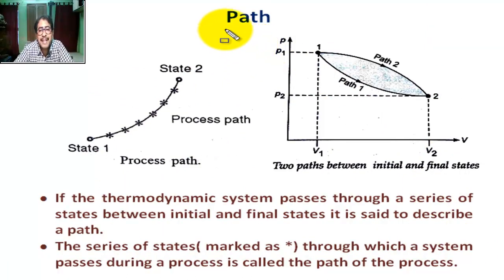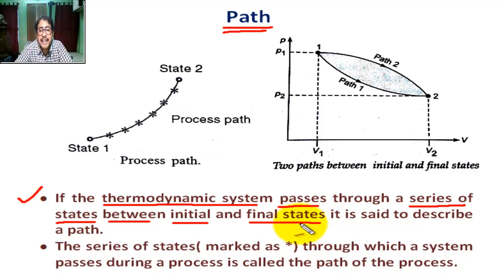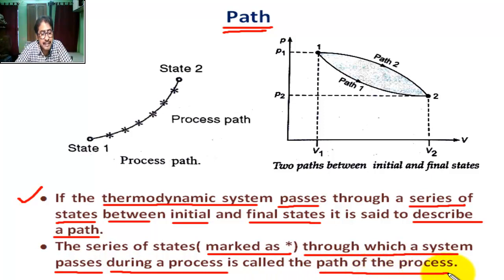Now, what is path? If the thermodynamic system passes through a series of states between initial and final state, it is said to describe a path. The series of states marked as asterisks through which a system passes during a process is called the path of the process.